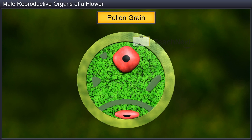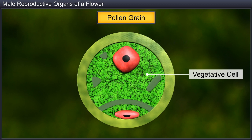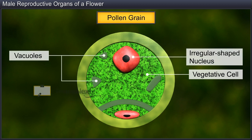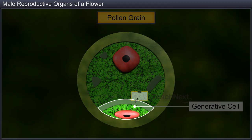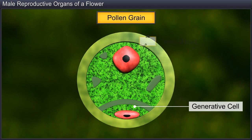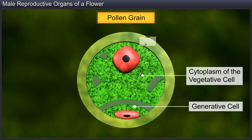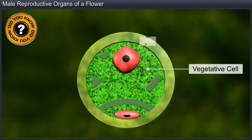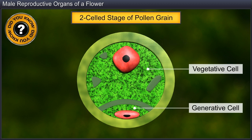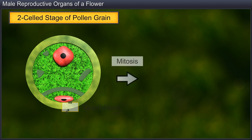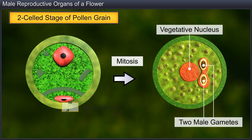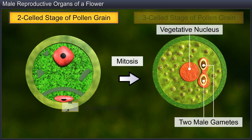The larger cell, known as the vegetative cell, is characterized by a large irregular shaped nucleus, vacuoles and abundant food reserves. The smaller cell, known as the generative cell, is distinctly spindle shaped and possesses dense cytoplasm. The generative cell floats in the cytoplasm of the vegetative cell. The vegetative cell and generative cell represent the two-celled stage of the pollen grain. Later, the generative cell undergoes mitotic division to produce two male gametes, and the pollen grain is now said to be at the three-celled stage.